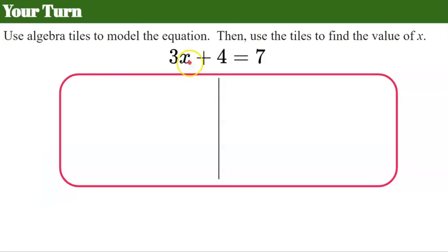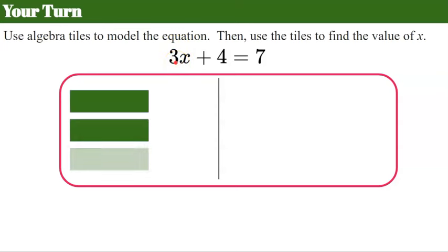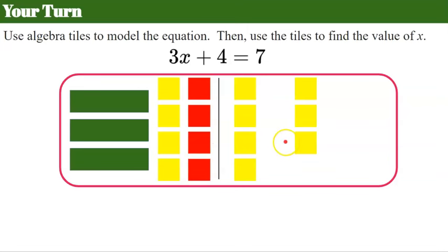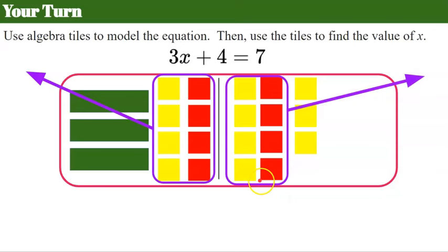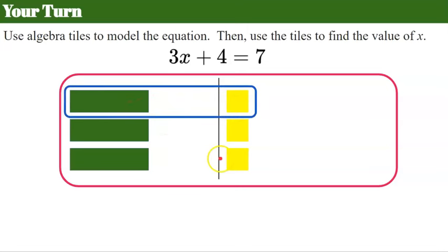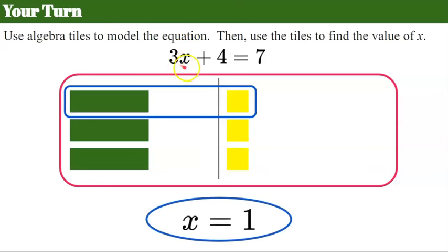Welcome back — let's check your work. First, model the equation: three long green x tiles, four positive square yellow tiles, and seven tiles after the equal sign. To solve, add four negative tiles to the left and four negative tiles to the right to keep the balance. We have four zero pairs on each side to remove. Now grouping the three x's: 1x equals 1, so the solution is x equals 1. Check: 3 times 1 is 3, plus 4 is 7. It checks.